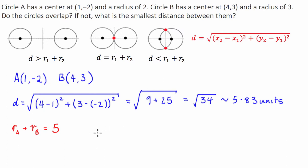Now what we can see is that the distance between the two centers of the circles is greater than the combined radius. So we're going to fit into this scenario here.